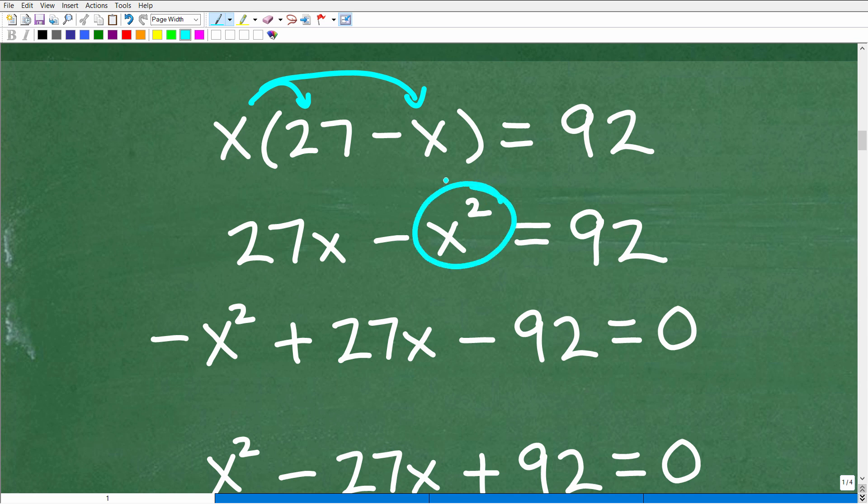So here we have an X squared. So now we are thinking quadratic equation. This is a second degree polynomial, meaning there's going to be two solutions. Now at this point as well,